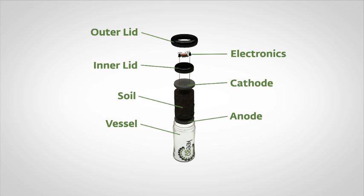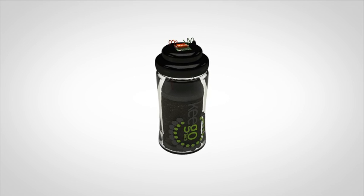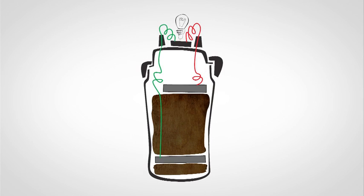In this configuration, a healthy community of electricity-generating microbes will develop on the surface of the anode in a matter of days. These bacteria have unique metabolic abilities which enable them to respire the sugars and nutrients within the soil.